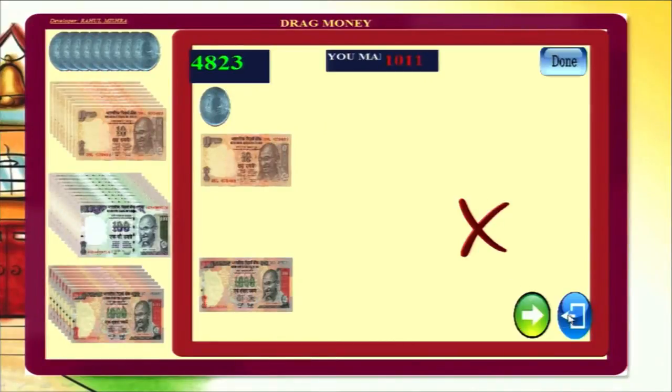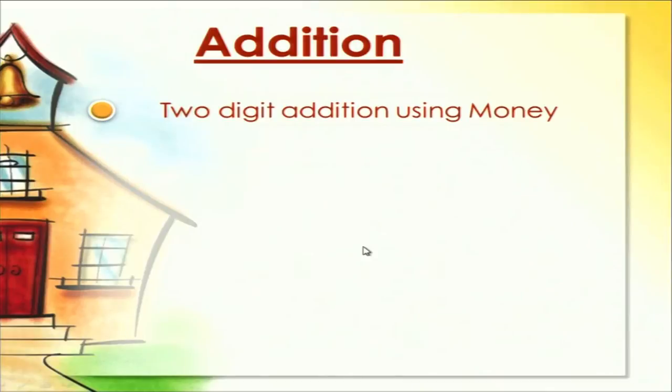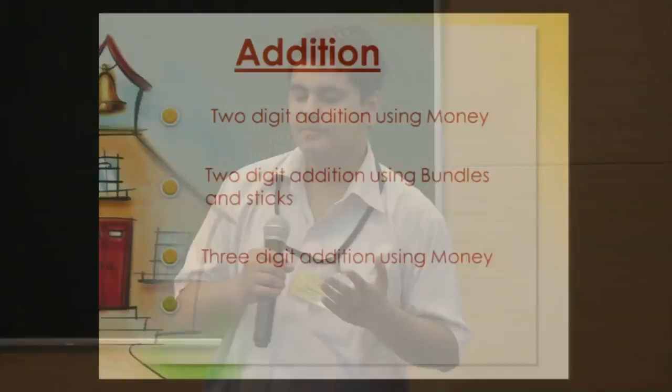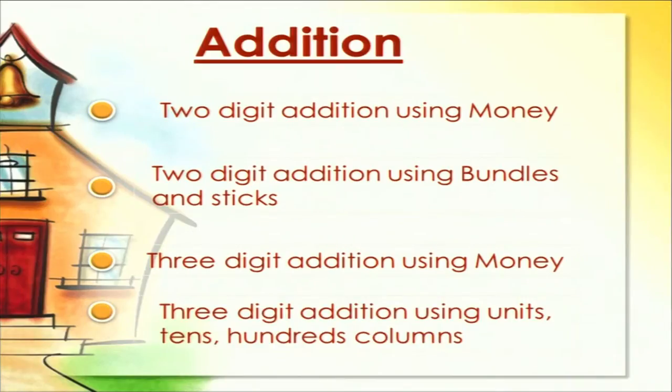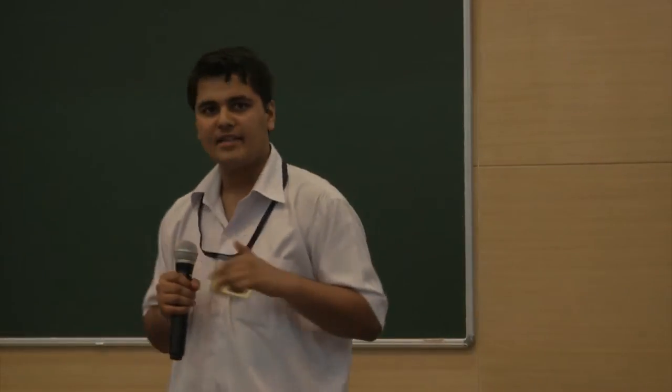The next module is addition. In addition, we have done 4 activities each with at least 2 sub-activities. We have done 2-digit addition using money and also with bundles and sticks, with and without carry. Then we have done 3-digit addition using money. Finally, we demonstrated the conventional addition procedure using coloured columns, and this activity had three modes: demonstration, interactive and test.